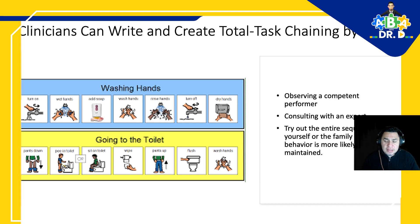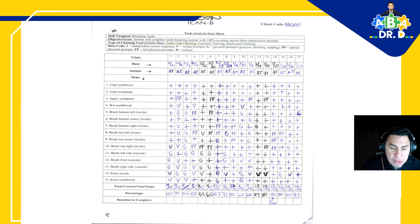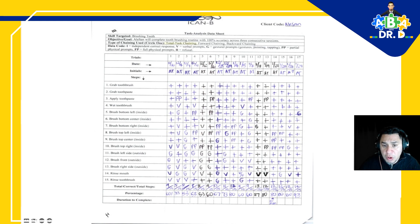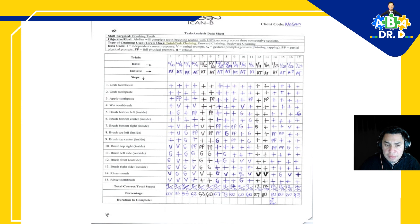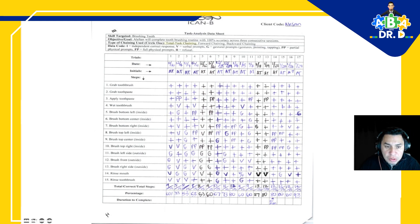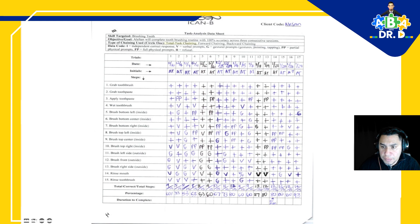Here's an example of what a task analysis data sheet looks like. At the top it mentions the skill being targeted — brushing teeth. The objective is for the student to complete this brushing teeth routine with 100% accuracy across three consecutive sessions. The type of chaining procedure is identified as total tasks. For data collection, they use I for independent — you'll also see pluses, which mean the same thing — V for verbal prompt, G for gestural, P for partial, PP for partial physical, FP for full physical, and R for refusal.